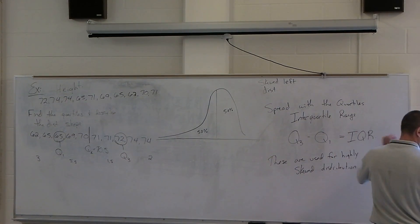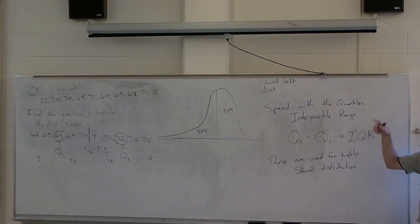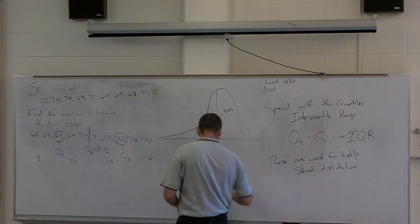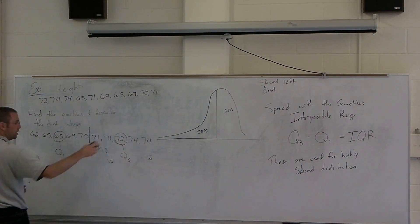Alright, and then one last thing for the IQR. If we're using these for highly skewed distributions, at the beginning of class, we talked about potential outliers for bell-shaped distributions. We can talk about potential outliers for skewed distributions by using this measure of spread over here.